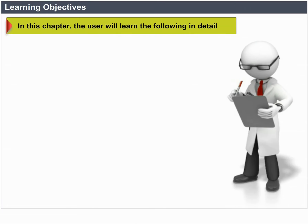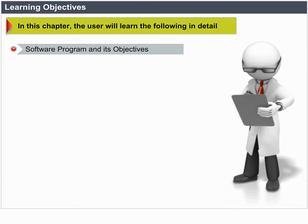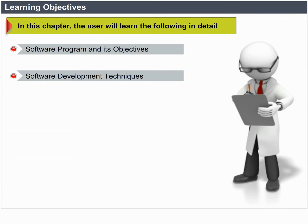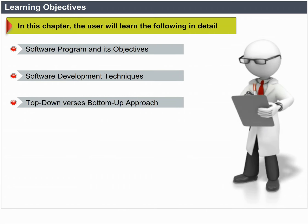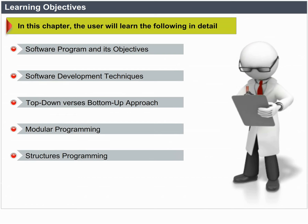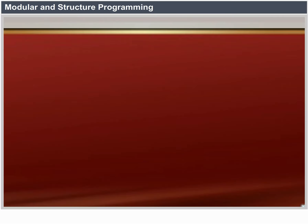Learning Objectives. In this chapter, the user will learn the following in detail: software program and its objective, software development techniques, top-down versus bottom-up approach, modular programming, structured programming, and introduction about object-oriented approach.